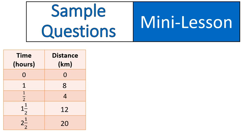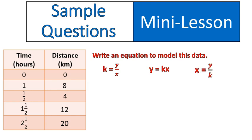One question you might be asked is to write an equation that models this data. There are three different equations you can write. One is your constant of proportionality equation. Two is solving for y. And three is solving for x. Usually, in most cases, they want you to give the middle equation. The one solving for your y value.